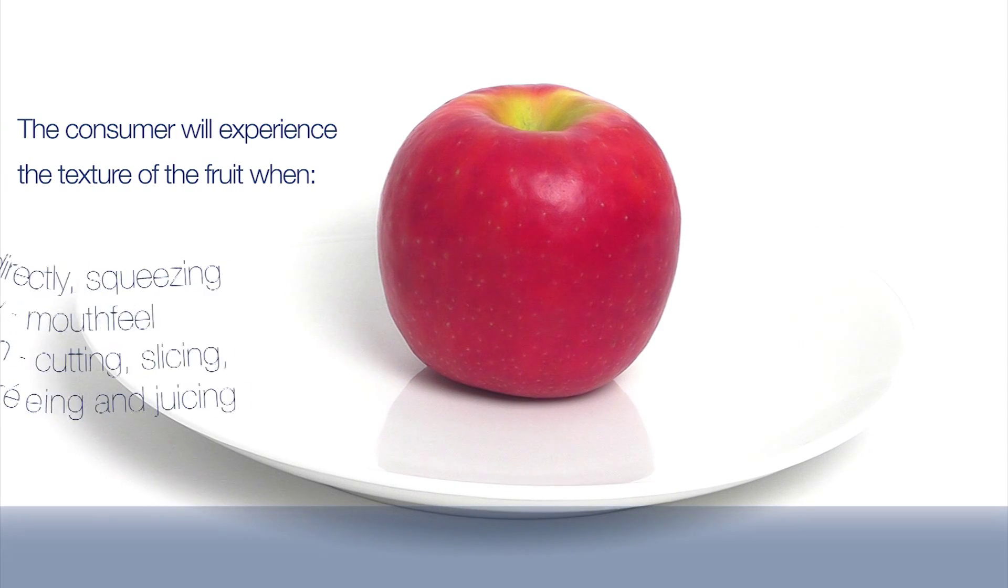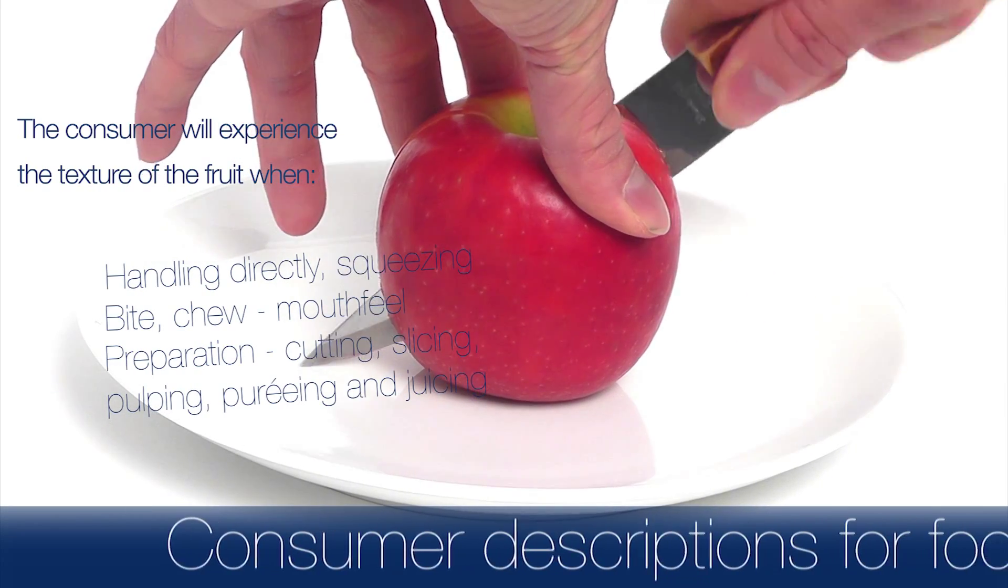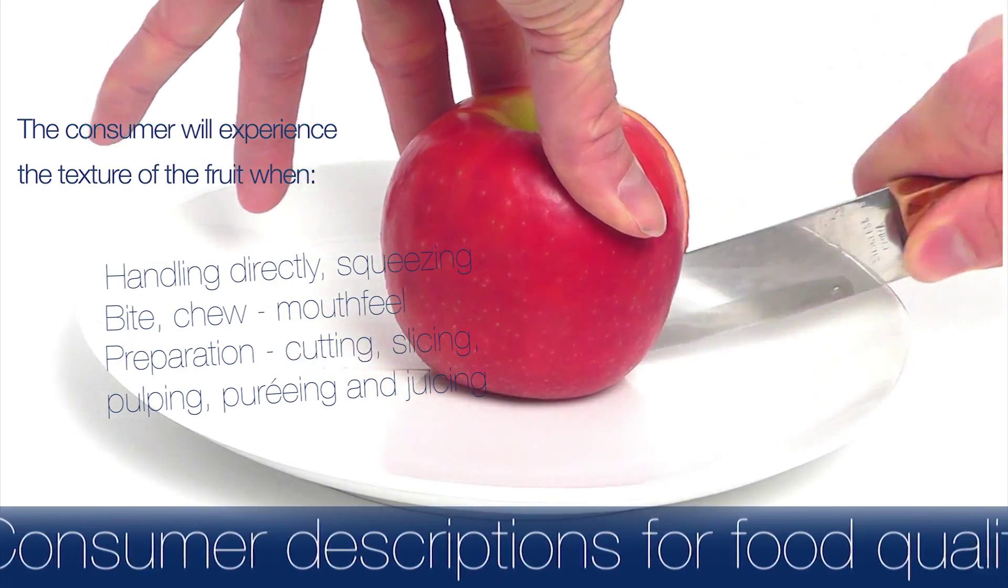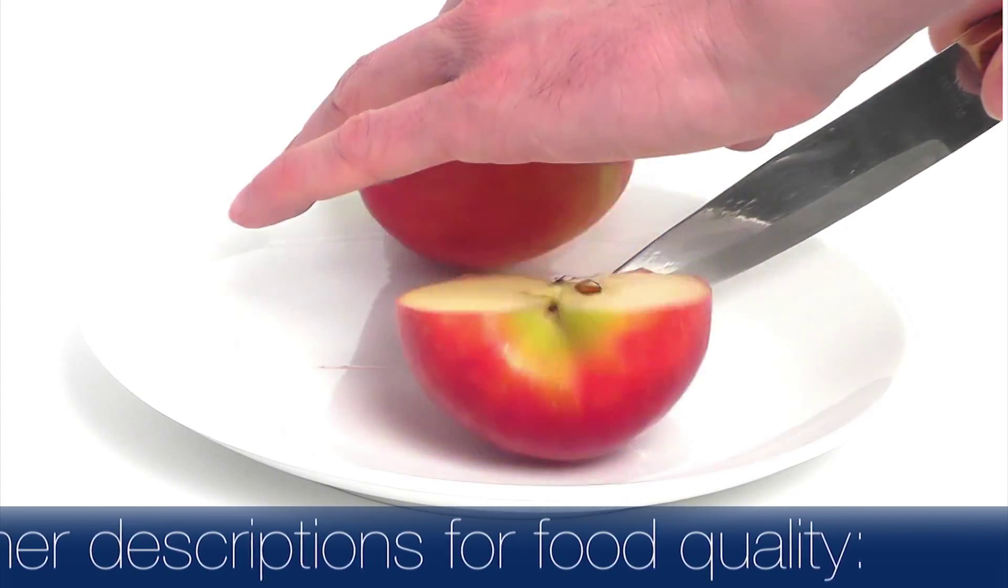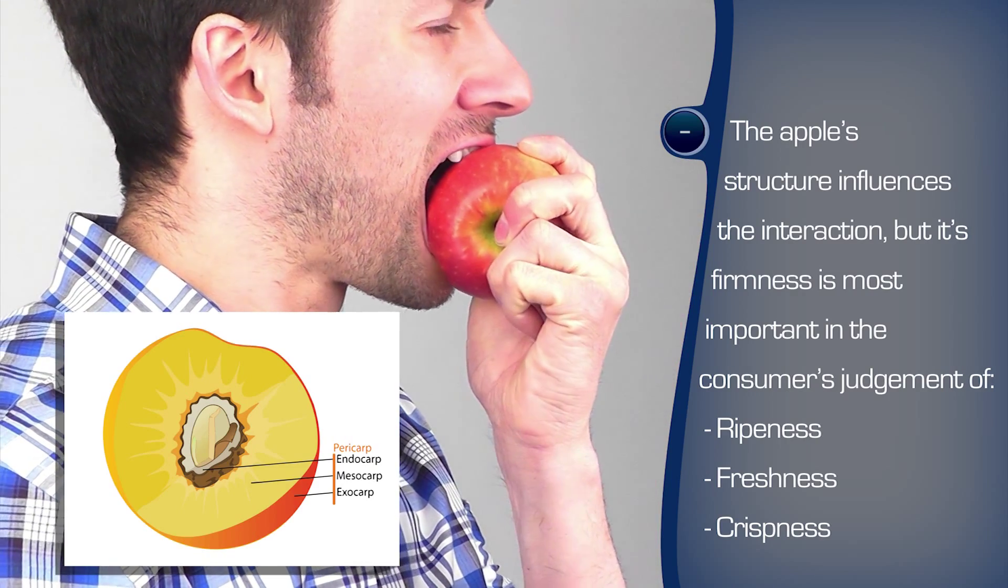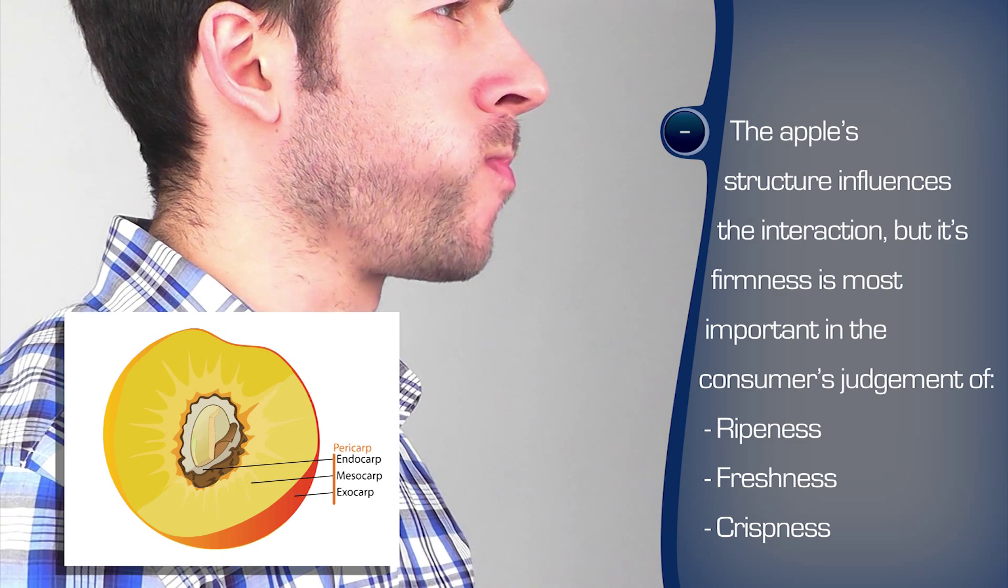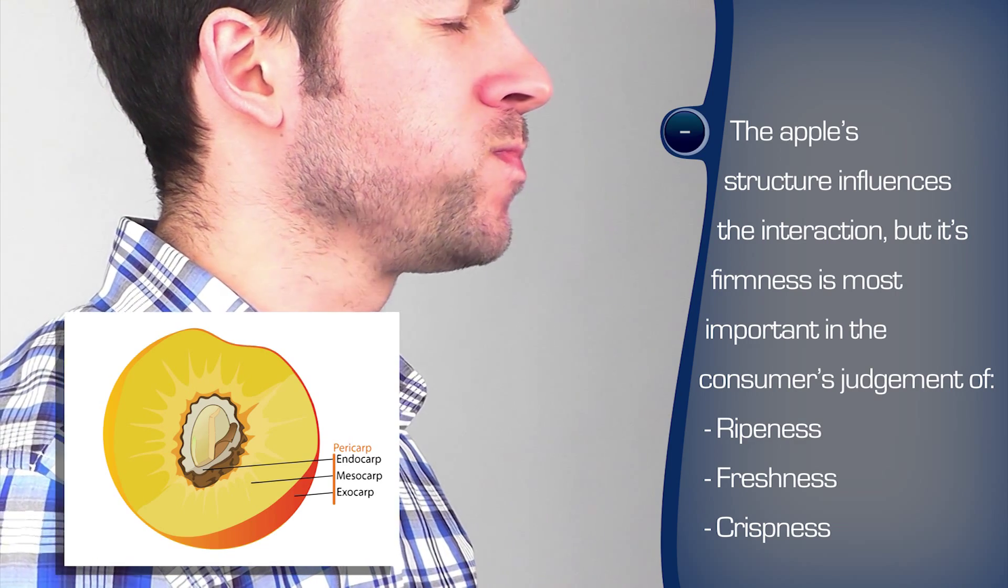A consumer may describe the sensory quality of food with different terms as they evaluate the texture through touch, mouthfeel and in other ways as they interact with the product. For a fresh apple, the firmness of the initial bite through the skin determines the crispness and the way the inner flesh yields as an important factor in conveying its ripeness.